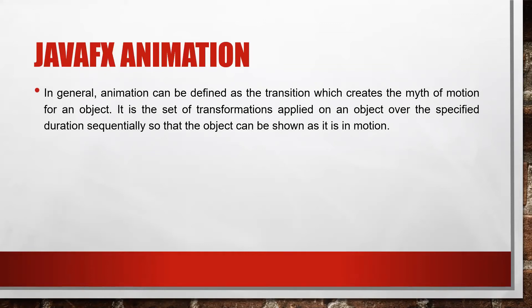Animation can be defined as the transition which creates the illusion of motion for an object. It is a set of transformations applied on an object over a specified duration sequentially so that the object can be shown as if it is in motion. This is possible using transition or rotation — an object can be rotated from the X axis, Y axis, or Z axis in the 3D concept.